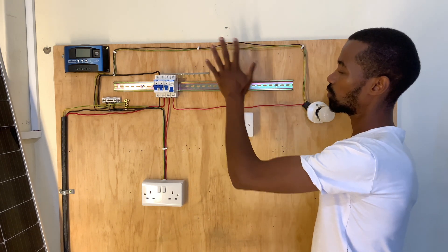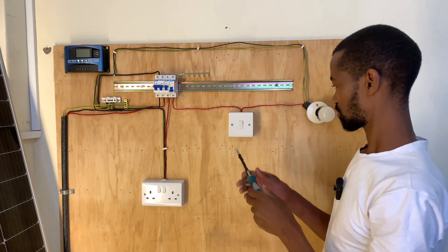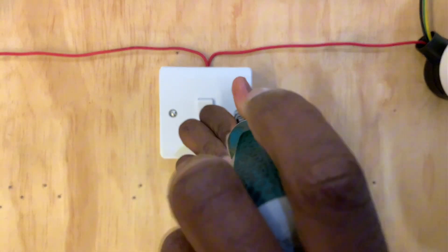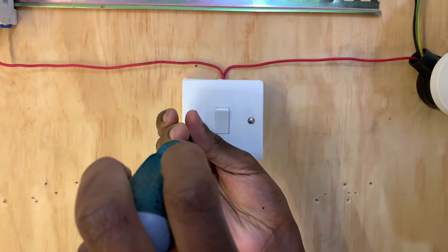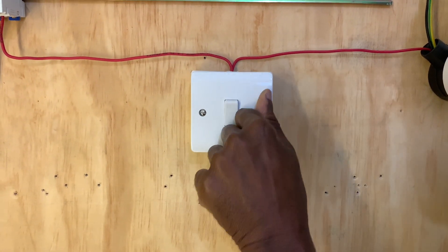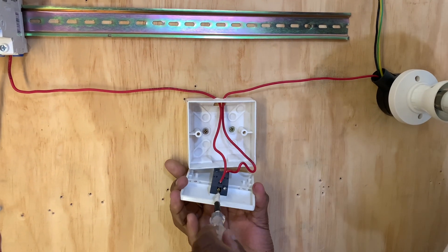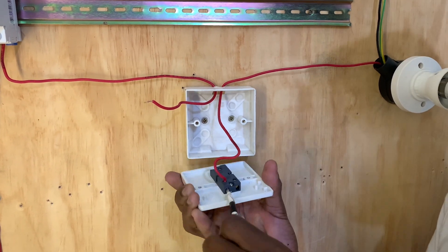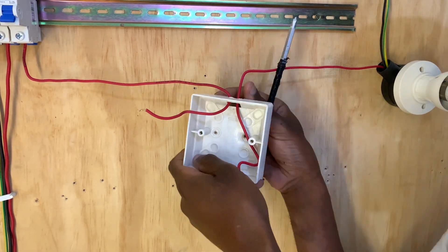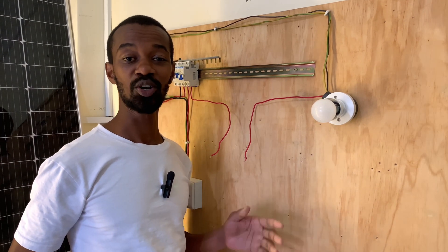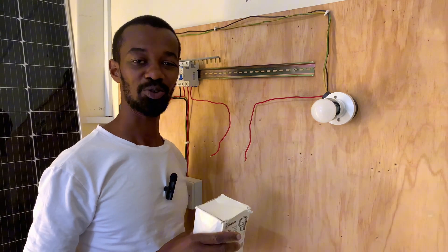The wiring will remain the same — the only thing that I'm getting rid of is this switch. Having gotten rid of the manual switch, it is time for me now to wire the photo cell.